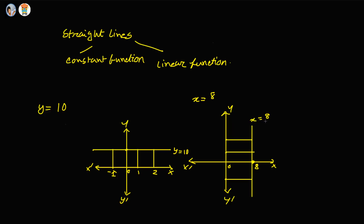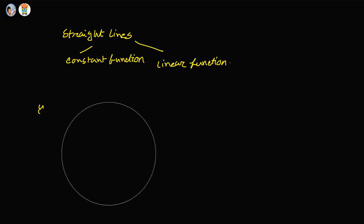Now, we will talk about linear function. Say y equal to 5 plus twice x. How to draw this function? There are several ways to draw this linear function. Now, why is this linear? If x increases by 1 unit, y always increases by 2 units. That is why this is a linear function.